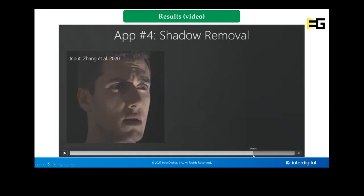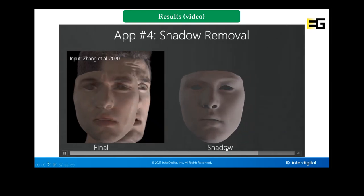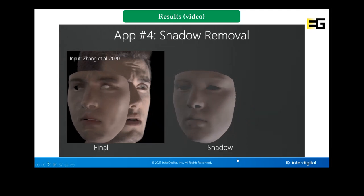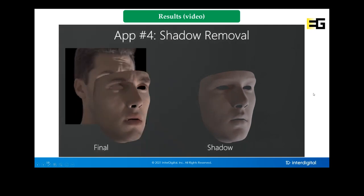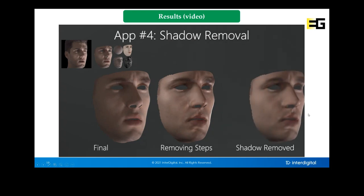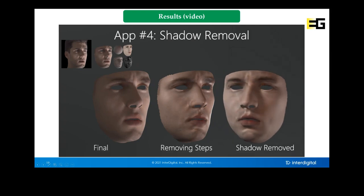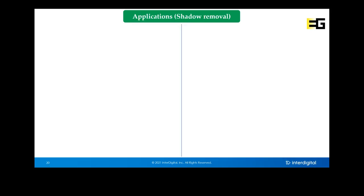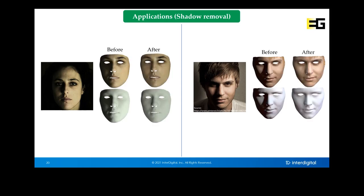We show a shadow removal application. We reconstruct a subject with projected shadows on the nose and show the estimated shadows. We then manipulate the estimated light stage toward a uniform light configuration to remove the projected shadows on the nose, showing the final reconstruction without shadows. In another example, given an input image we first reconstruct and estimate the light, then manipulate the estimated light stage toward a uniform configuration to remove projected shadows from the face.